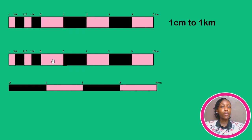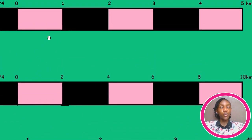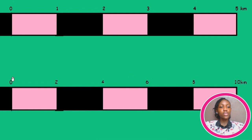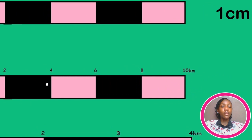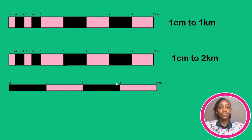For the next example, focusing only on the parts after the zero: the spacing is still the same — one centimeter — but now notice that the numbers are moving in twos: 0, 2, 4, 6, 8, 10. Because the distance between the boxes is one centimeter but the numbers move in twos, this map represents one centimeter to two kilometers.